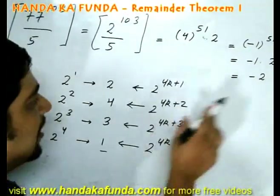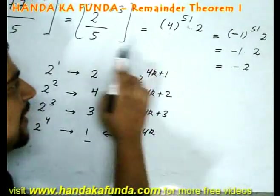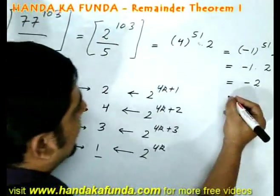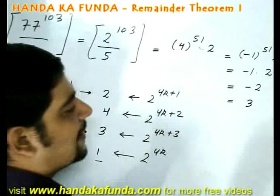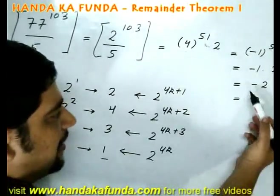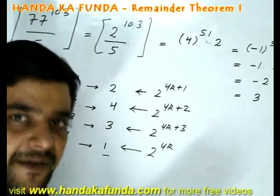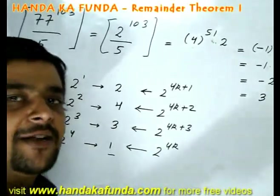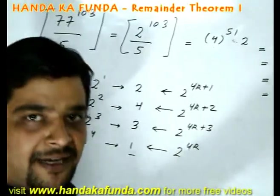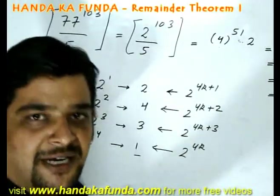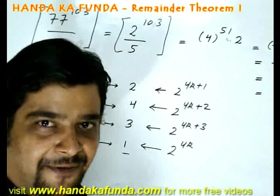I am getting a remainder of minus 2 when I am dividing the number by 5. I can directly write it as 3 as well, since 3 effectively I am getting from 5 minus 2. Getting a remainder of minus 2 from 5 is the same as getting a remainder of 3, is the same as getting a remainder of 8, is the same as getting a remainder of 13. I hope you get the drift.